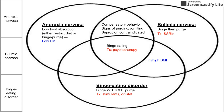This has been a short video on anorexia, bulimia, and binge eating disorder — the three eating disorders in the DSM-5. There are other DSM-5 eating disorders like pica, but those are less likely due to a primary psychiatric cause. I hope this video was helpful, and thank you for listening.